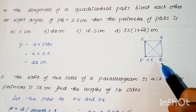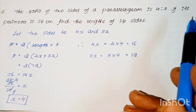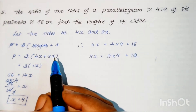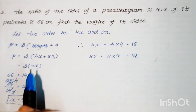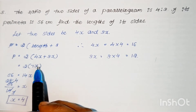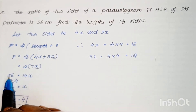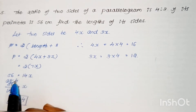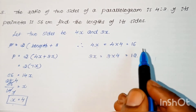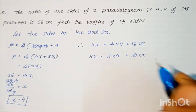Problem: The ratio of two sides of a parallelogram is 4:3 and its perimeter is 56 cm. Find the lengths of its sides. Let the sides be 4x and 3x. Perimeter = 2 × (4x + 3x) = 2 × 7x = 14x. So 14x = 56, giving x = 4. Therefore the sides are 4 × 4 = 16 cm and 3 × 4 = 12 cm.